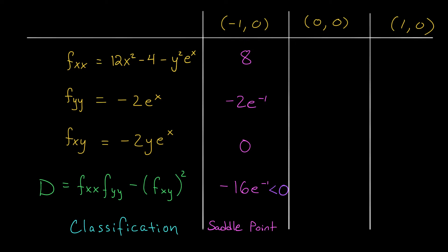Okay, what about at 0, 0? Well, by plugging it into these expressions, I should get 0 minus 4 minus 0. That's minus 4. Minus 2 times e to the 0 is minus 2. And minus 2 times 0 e to the 0 is 0. So the value of d here is minus 4 times minus 2. That's 8. Again, minus 0 squared. That's 8. d here is positive.